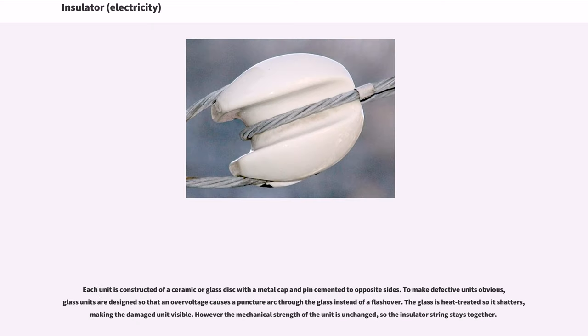Each unit is constructed of a ceramic or glass disc with a metal cap and pin cemented to opposite sides. To make defective units obvious, glass units are designed so that an overvoltage causes a puncture arc through the glass instead of a flashover. The glass is heat-treated so it shatters, making the damaged unit visible. However, the mechanical strength of the unit is unchanged, so the insulator string stays together.